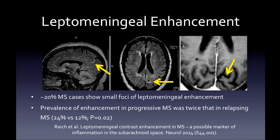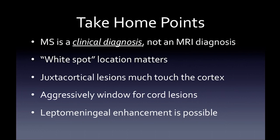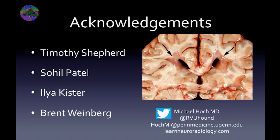Take-home points: MS is a clinical diagnosis, not an MRI diagnosis. The McDonald criteria were created to identify patients at risk for converting to MS after an initial presentation, not to differentiate MS from other diseases. White spot location matters — juxtacortical lesions must touch the cortex, periventricular lesions must touch the ventricle. Look for cortical, juxtacortical, periventricular, infratentorial, and spinal cord lesions. Window aggressively on axial T2 for spinal cord. Leptomeningeal enhancement is possible in known MS cases.